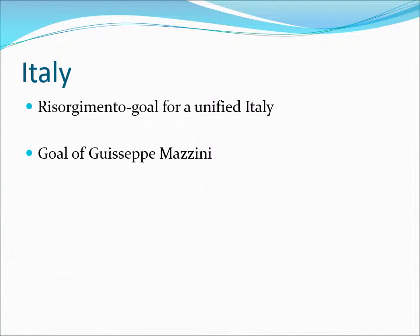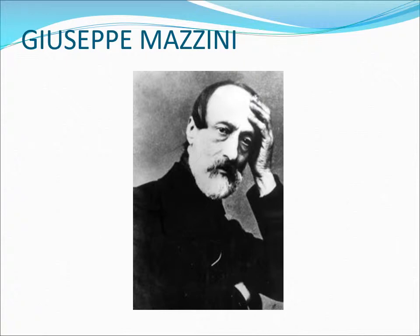In the 19th century, Italy was a patchwork quilt of small states. Here we see the idea of Risorgimento — the goal for a unified Italy. Risorgimento was the passion of a man named Giuseppe Mazzini. In 1848, he tried to organize revolts, but they were snuffed out by Austria. He's important, though, because he laid the foundation for future unification. His successor, Cavour, would take the process home.